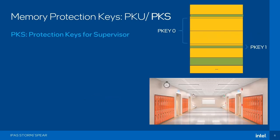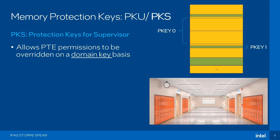That brings us to memory protection keys. There are two different implementations of protection keys for Intel: PKU for user space and PKS for supervisors — protection keys for supervisors — which is what we'll be focusing on for kernel compartmentalization. In essence, what this hardware feature allows you to do is override the permissions in the page table entry. Suppose you have a writable page that's mapped as writable and accessible. What you can do is for a certain domain — you define a domain key — override all the permissions for all the pages that fall under that domain and disable write access, for example, simply by writing to an MSR.